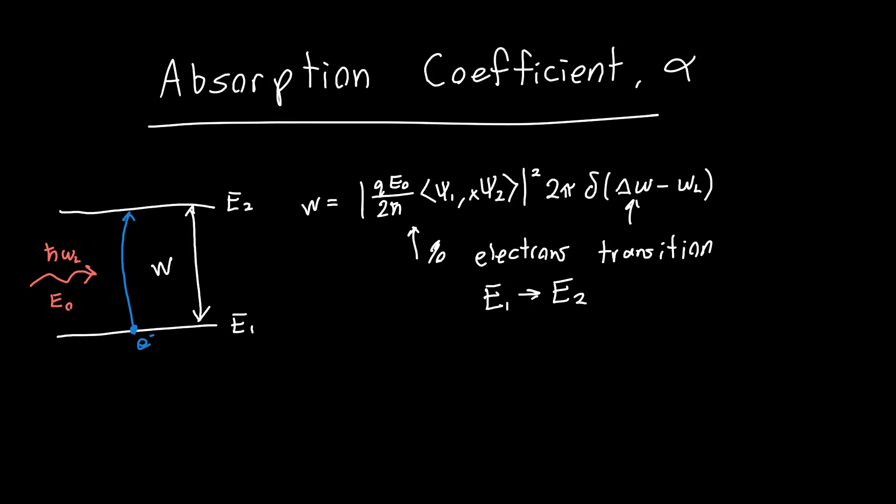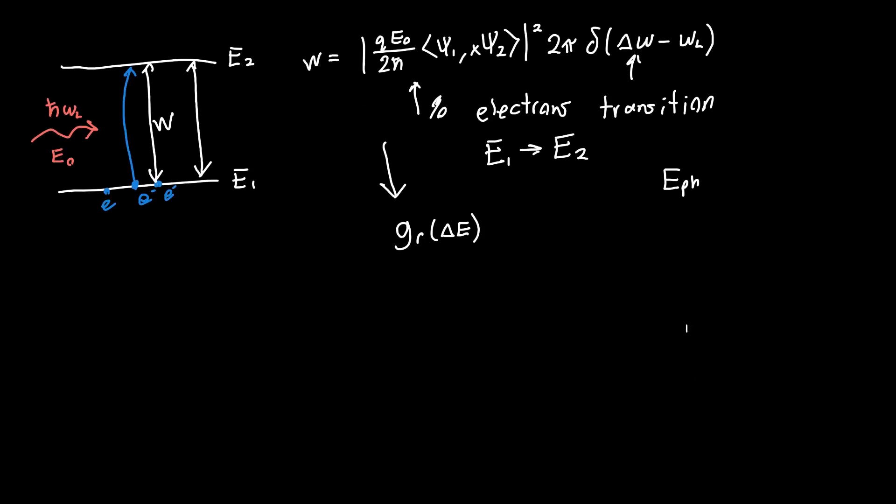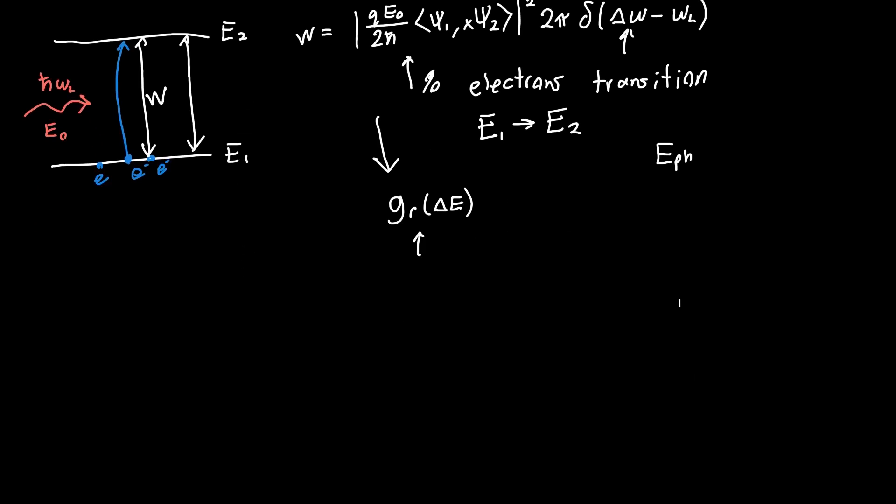So now all we need to figure out is how many electrons we have in this state E1. And we figured that out in the last video. This was given by our reduced density of states. And in the last video, I somewhat mistakenly said that this was a function of the photon energy. Really, it's a function of the energy separation between the two states. So we figured this out for our band structure, for the band structure of the semiconductor that we're dealing with.